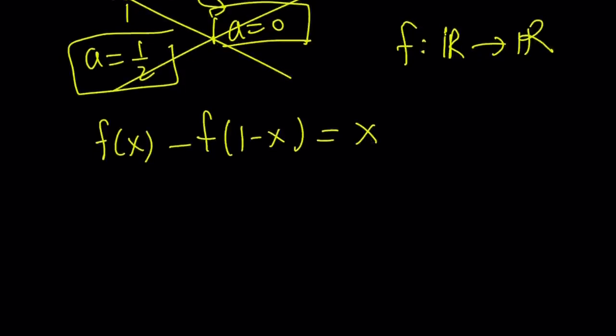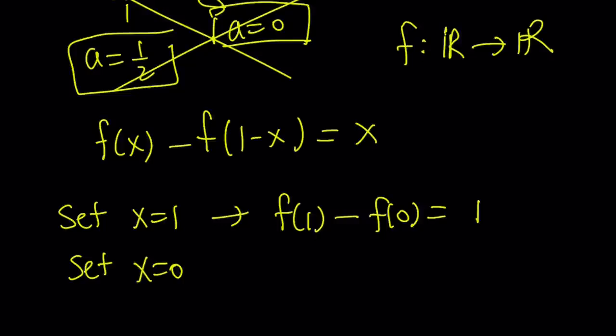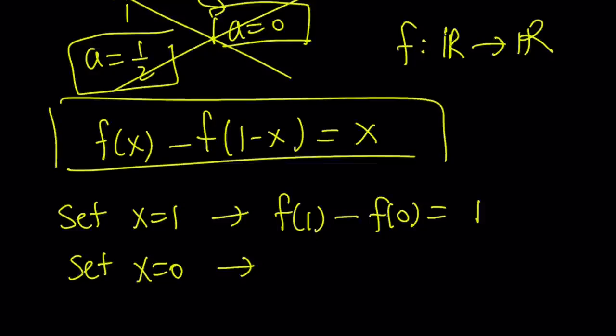Why did I say there are no solutions? Let's take a look. Suppose, since this equation is satisfied for all real numbers, set x equals 1. If you substitute everywhere, this is going to be f of 1 minus f of 0 equals 1. Notice that I got f of 0 from this equation. So that motivates me to set x equals 0 next. If you replace x with 0 in the original equation, then you get f of 0 minus f of 1 equals 0.